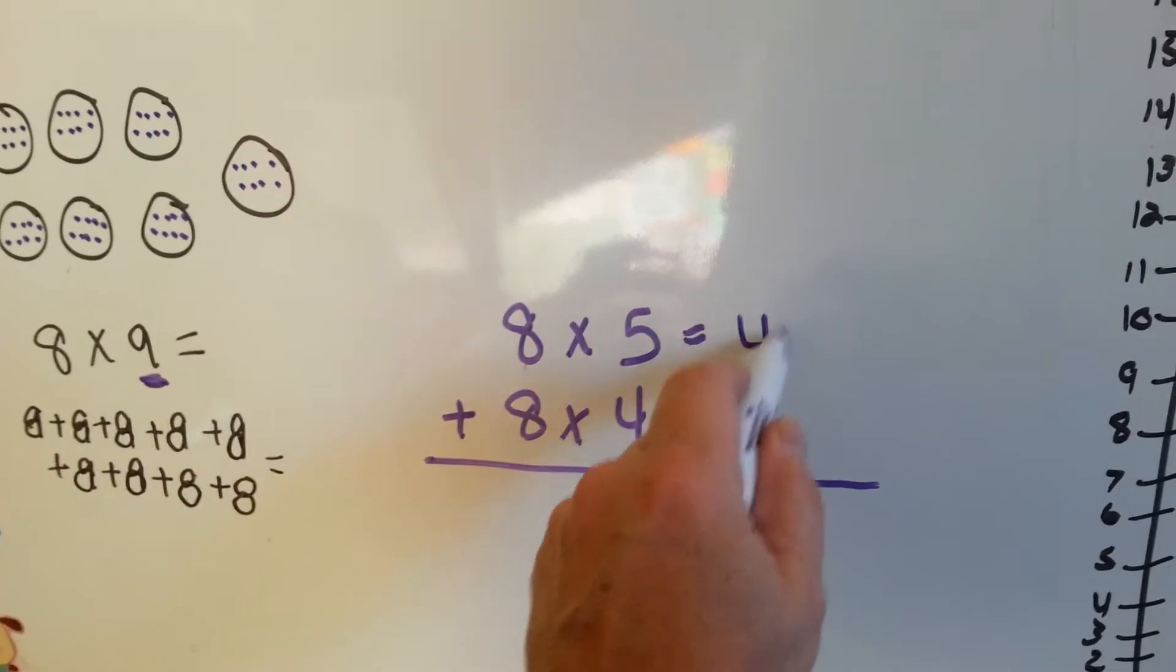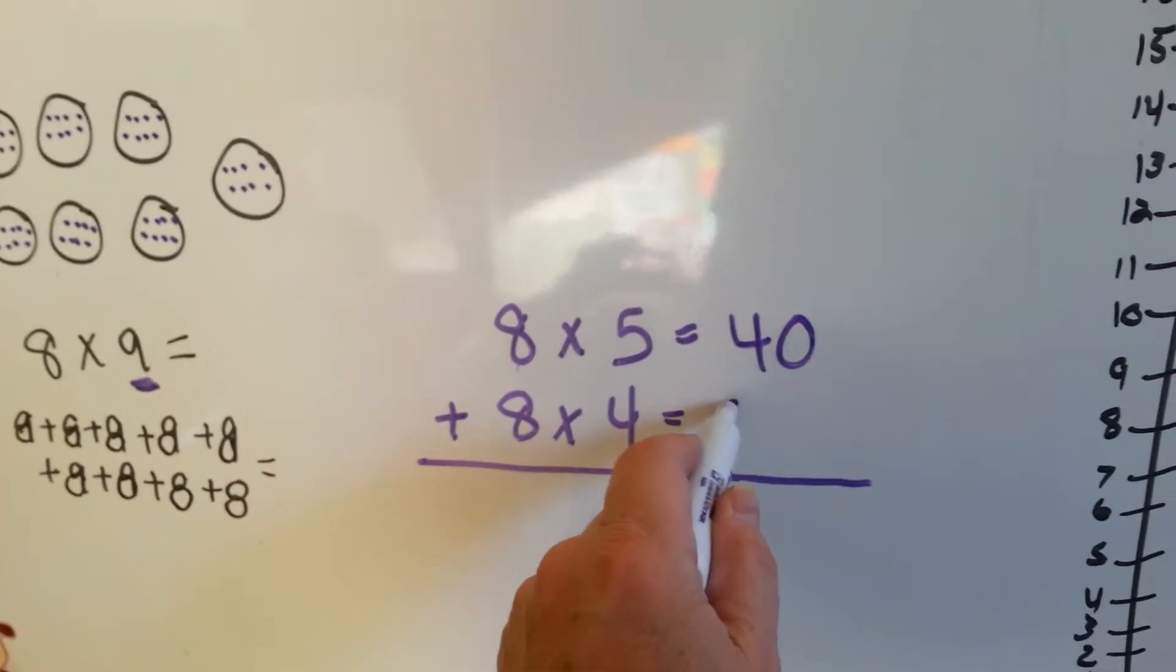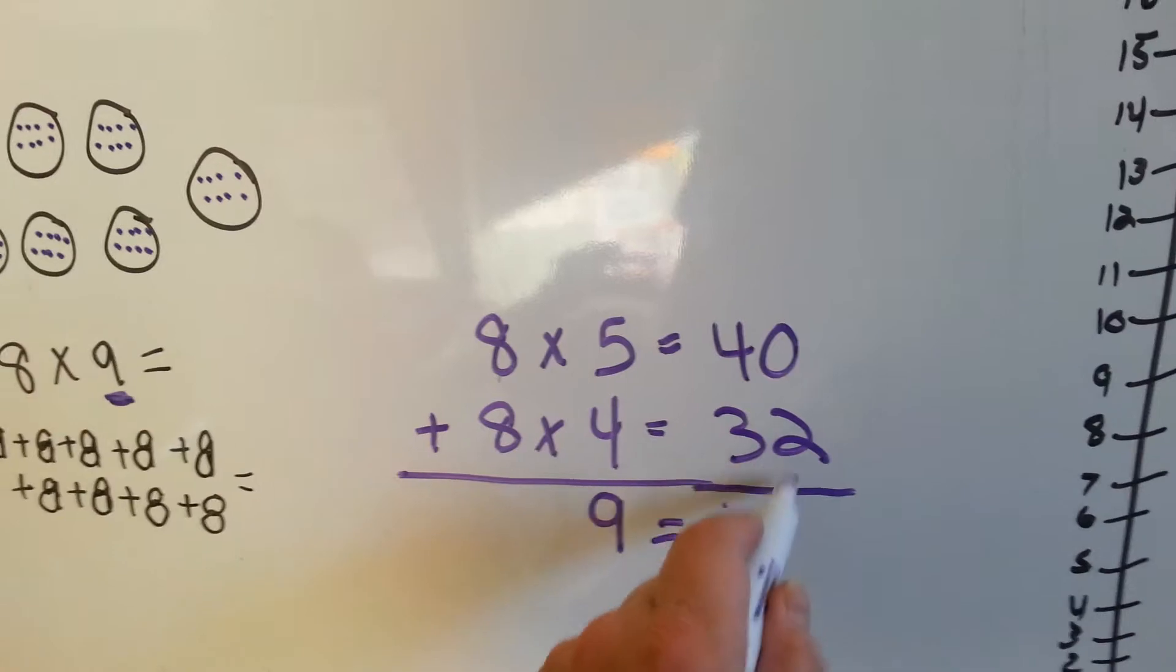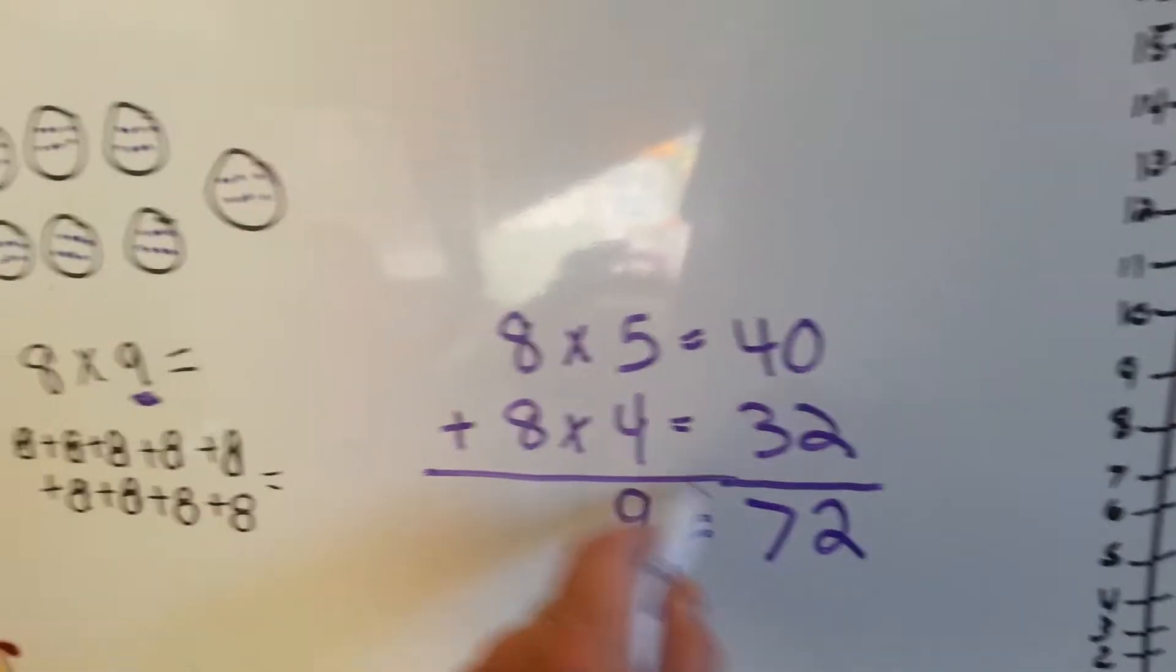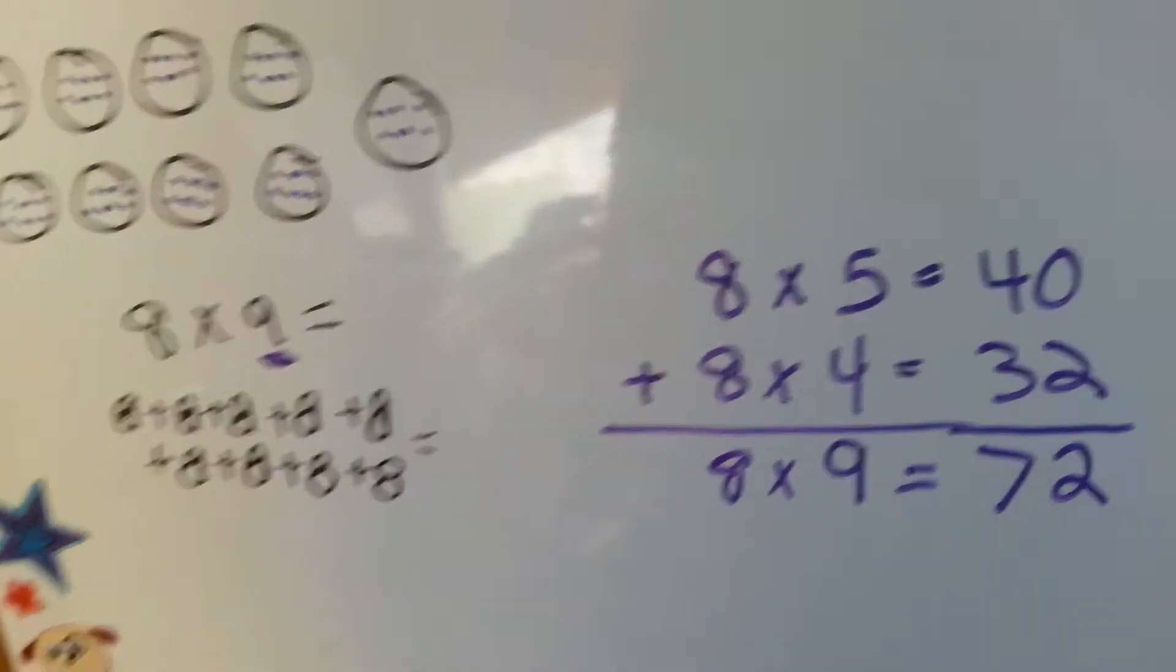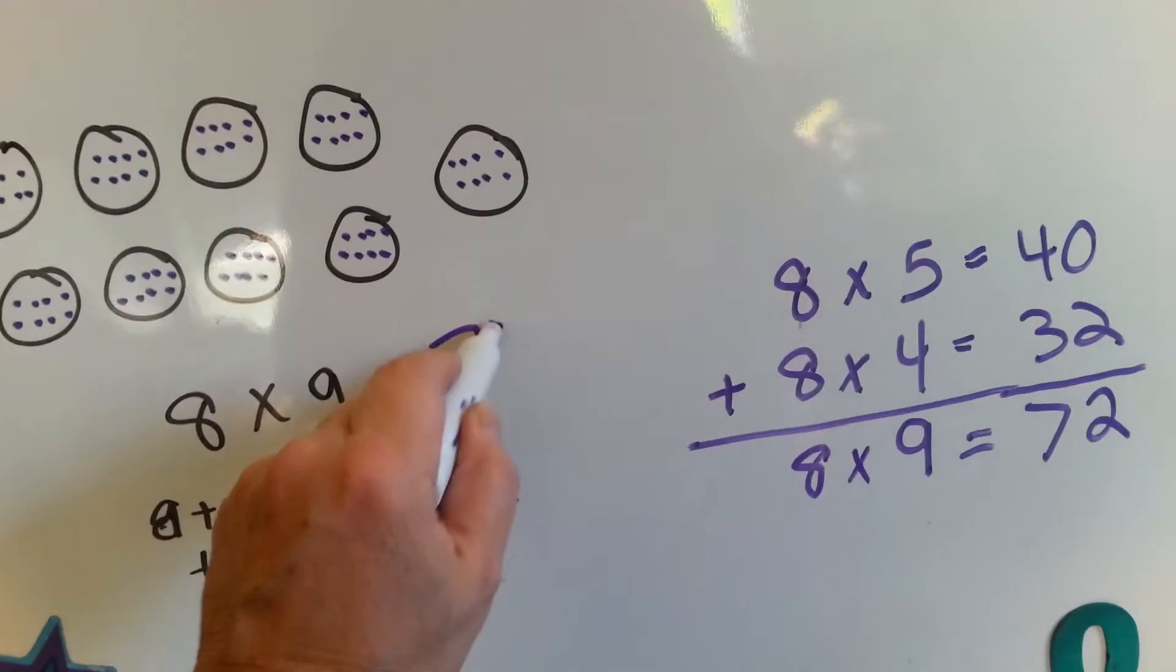Eight times five is forty. Eight times four is thirty-two. If we add them together, that means eight times nine is seventy-two. And that's correct.